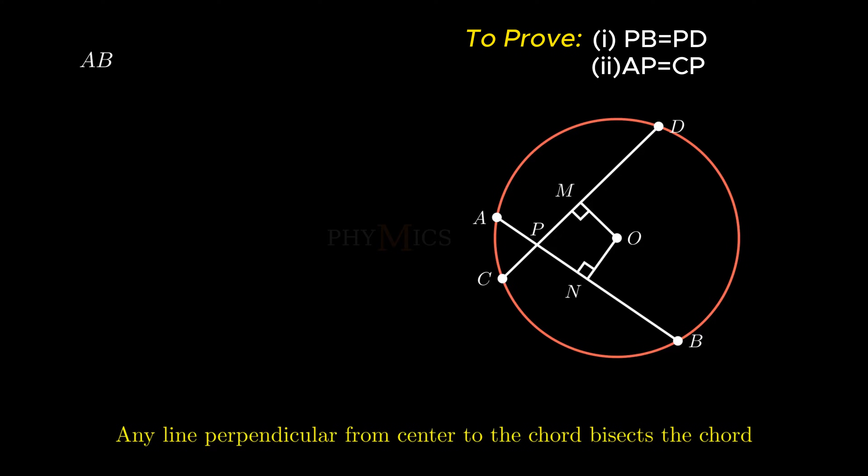Since chord AB is equal to chord CD, dividing both sides by two we get segment NB is equal to segment MD.